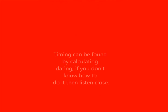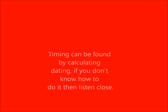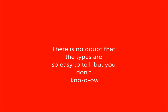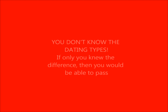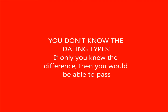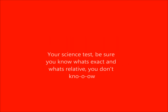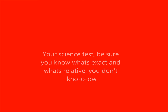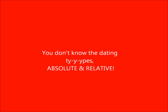Timing can be found by calculating dating. If you don't know how to do it then listen close. There is no doubt that the types are so easy to tell, but you don't know the dating tides. If only you knew the difference, then you would be able to pass your science test. Be sure you know what's exact and what's relative. You don't know the dating tides — absolute and relative.